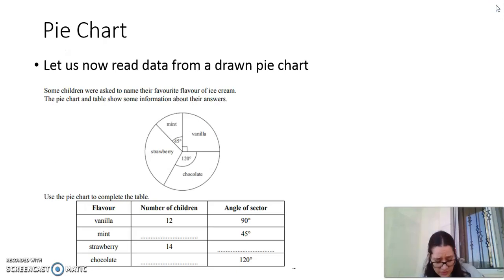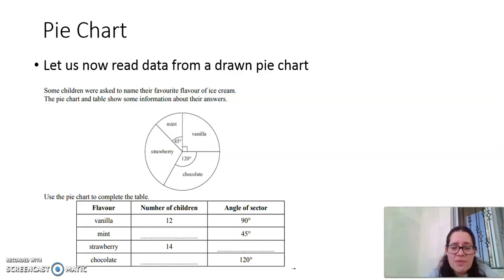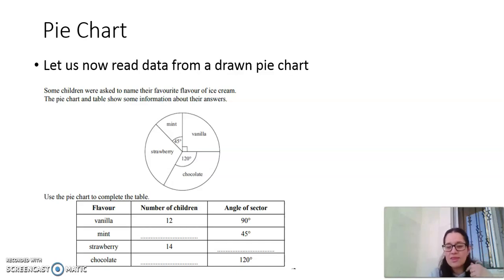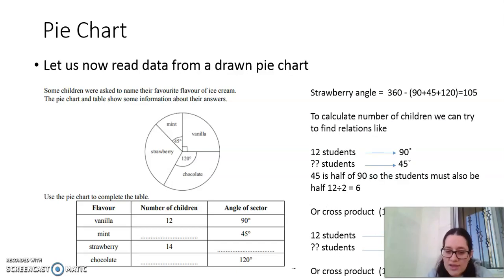Now we are going to study the second part of our lesson: reading data from a given pie chart. Some children were asked to name their favorite flavor of ice cream. The table shows: vanilla — 12 students, 90 degrees; mint — unknown number, 45 degrees; strawberry — 14 students, unknown angle; chocolate — unknown number of children, 120 degrees. To find strawberry's angle: 360 minus (90 + 45 + 120) = 105 degrees.